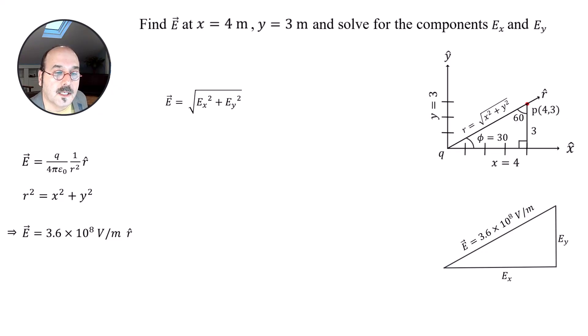So E_X squared plus E_Y squared. We're getting pretty close to getting all the information we need to be able to get those two components X and Y, or I should say E_X and E_Y. So I'll go ahead and put these angles back in for phi equals 30 for this angle, and then this would be 60. We have lots of options to be able to calculate E_X and E_Y.